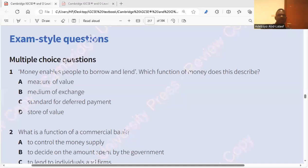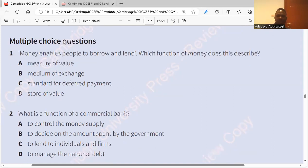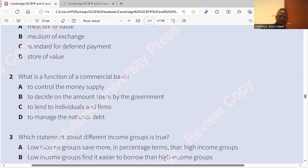Okay. The first one: money enables people to borrow and lend. Which function of money does this describe? C, standard of deferred payment.